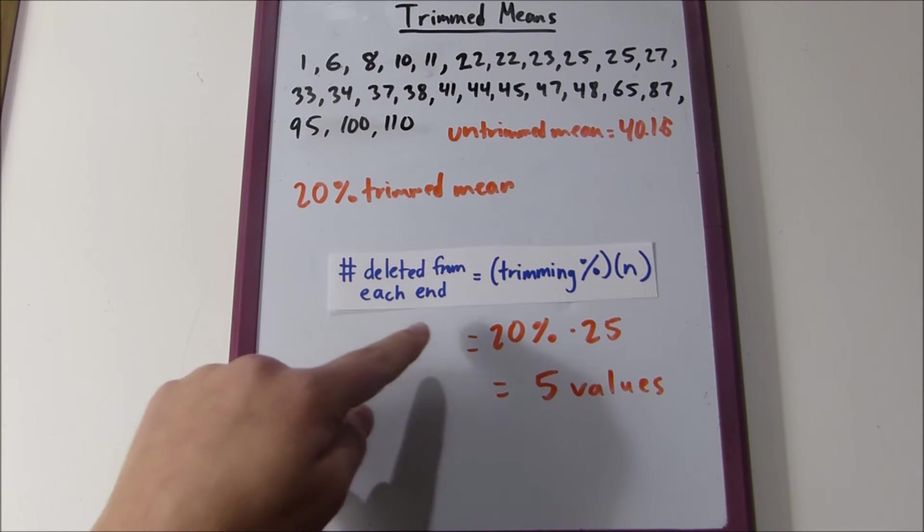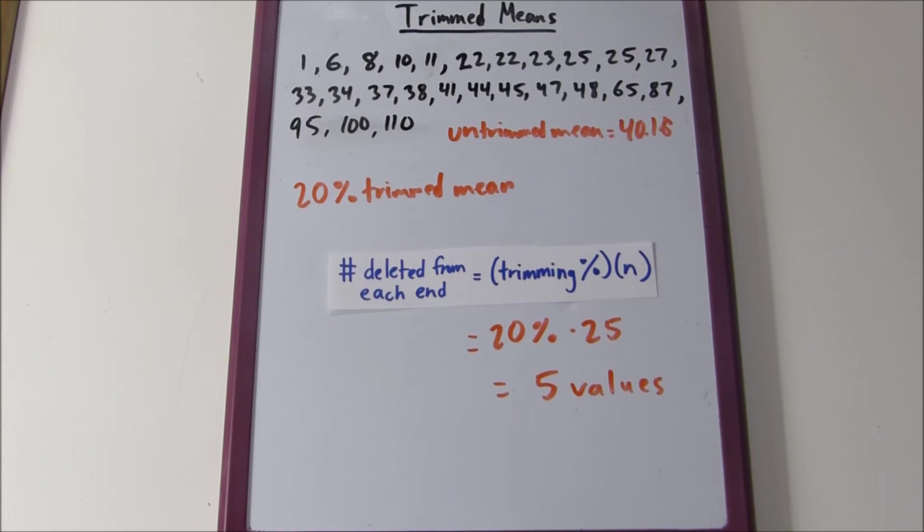You can take 5 values from each end. This is important - it's from each end. Sometimes people get confused: do I take 5 total? Think about that. Does that really make sense? No, you would take 5 from each end.